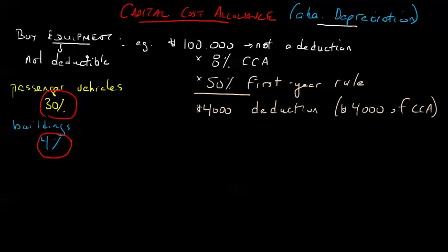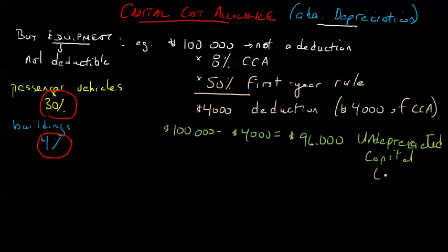And then in the second year, so now let's assume we're out in the second year here. And in the second year, you would again apply that 8% depreciation. So if we took $4,000 off in the first year, we would take now $100,000 minus $4,000. And the new basis for our depreciation is $96,000. That $96,000 is the depreciated value in tax terms. That's what we now refer to as the undepreciated capital cost, or UCC.